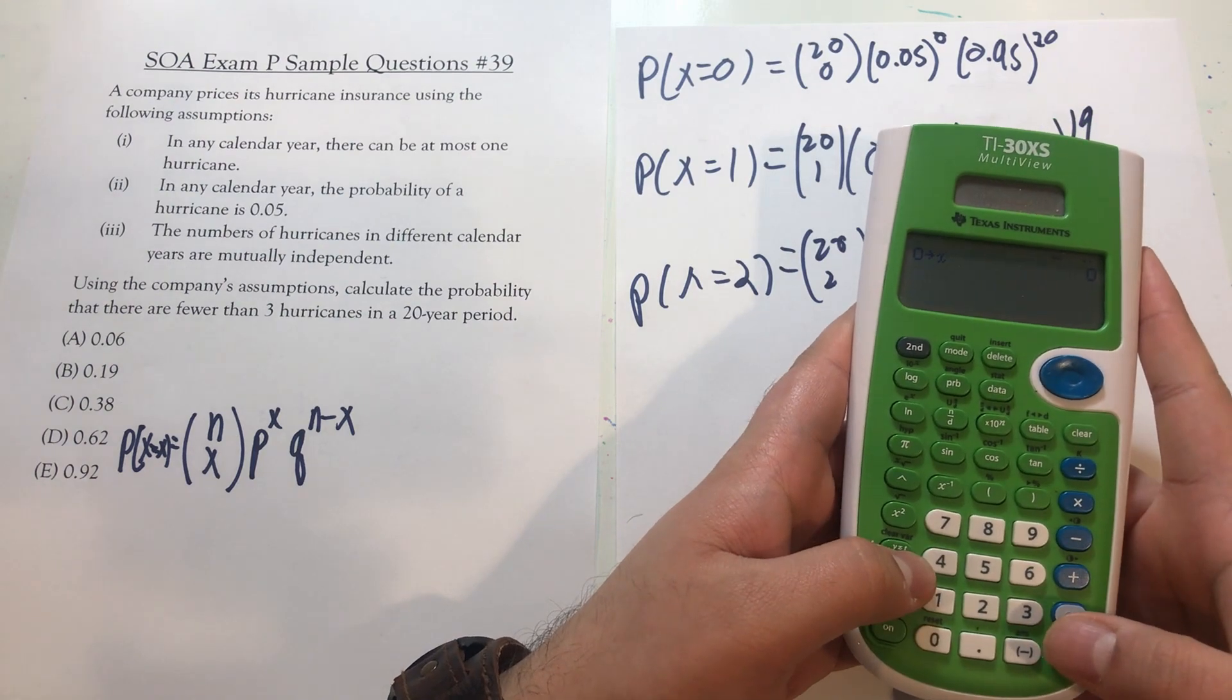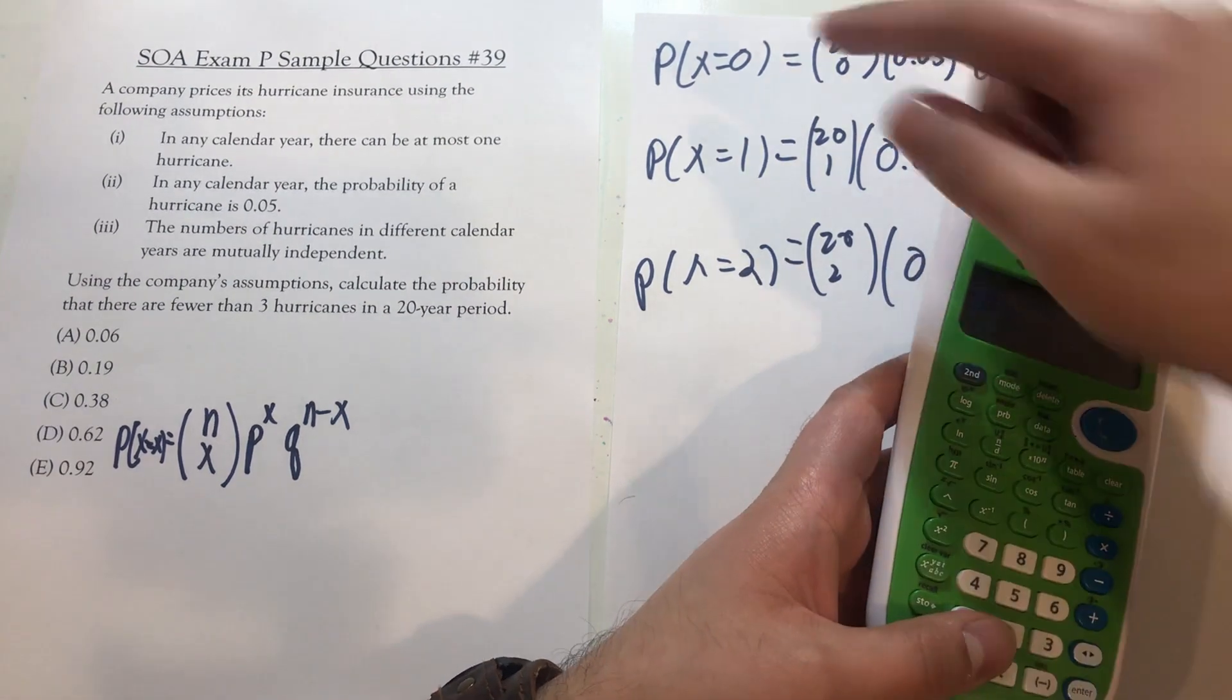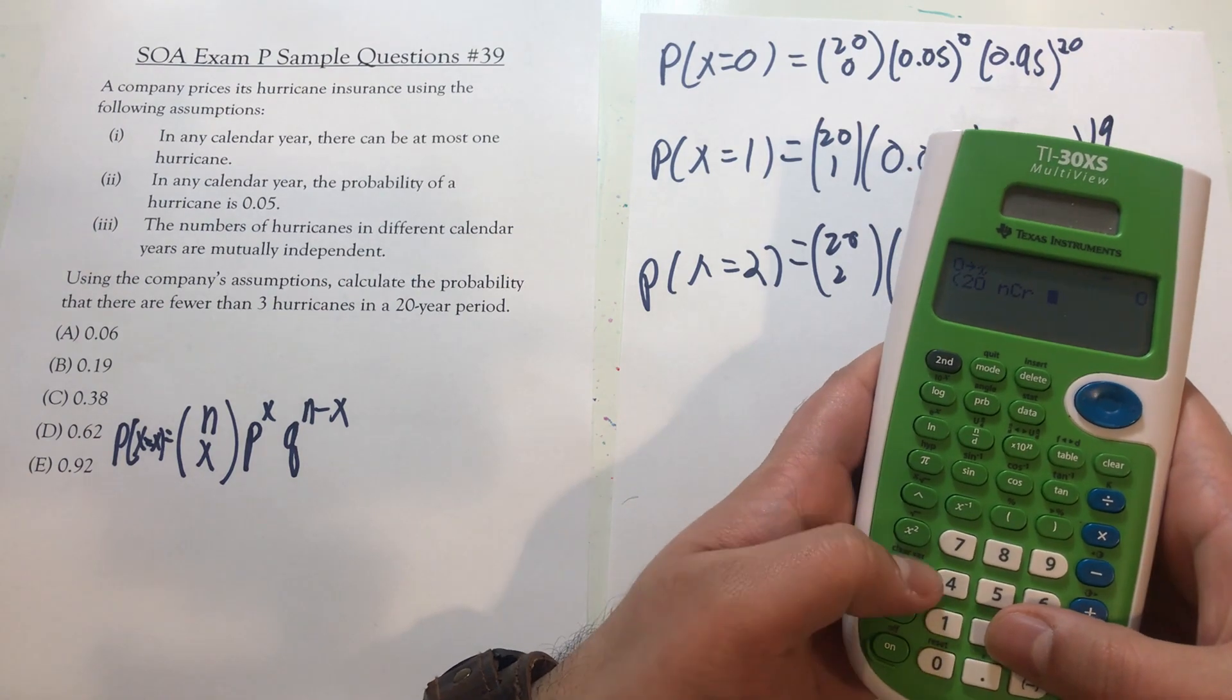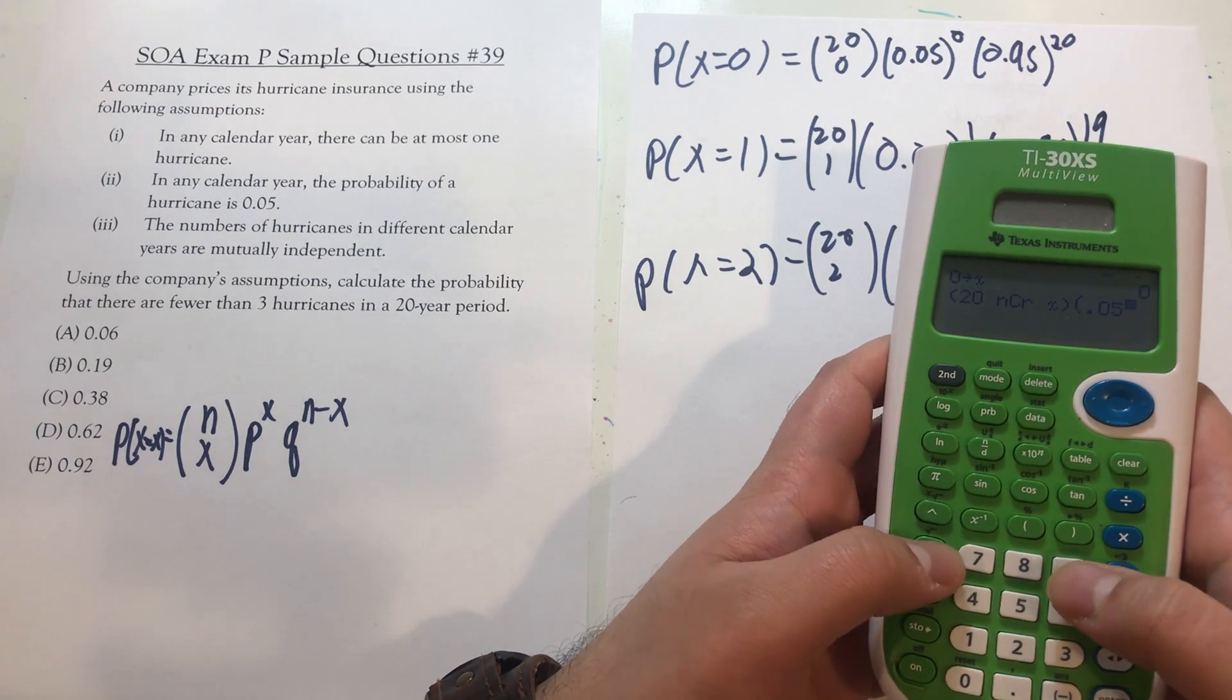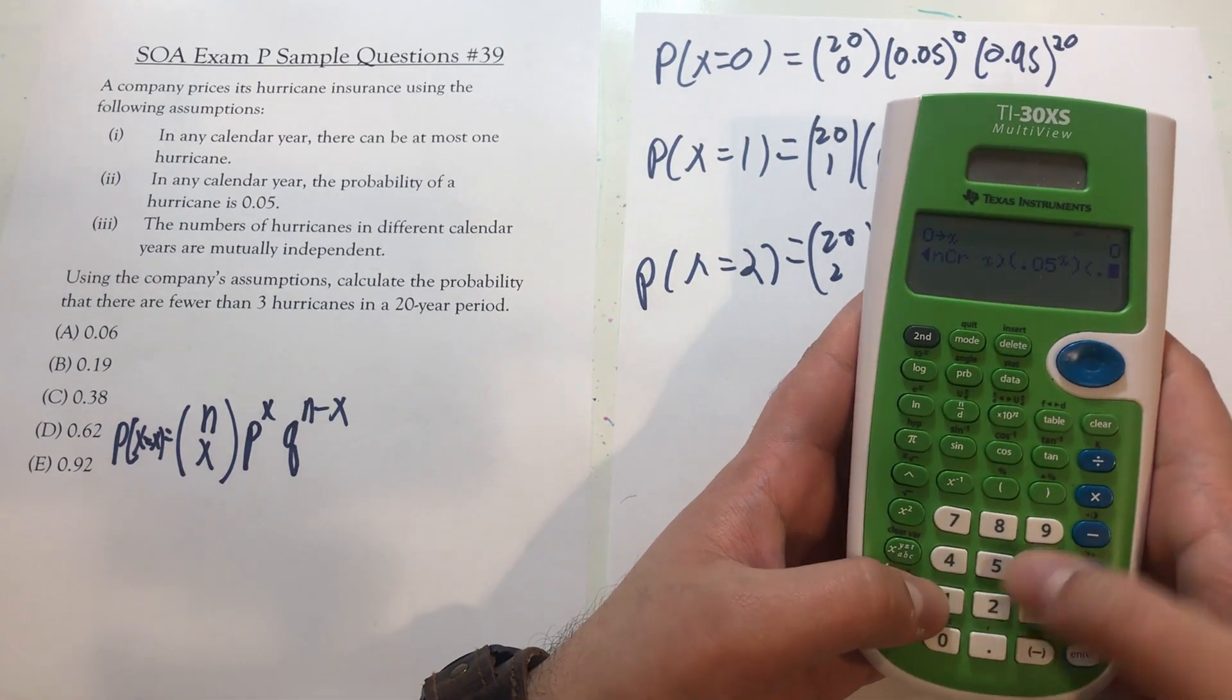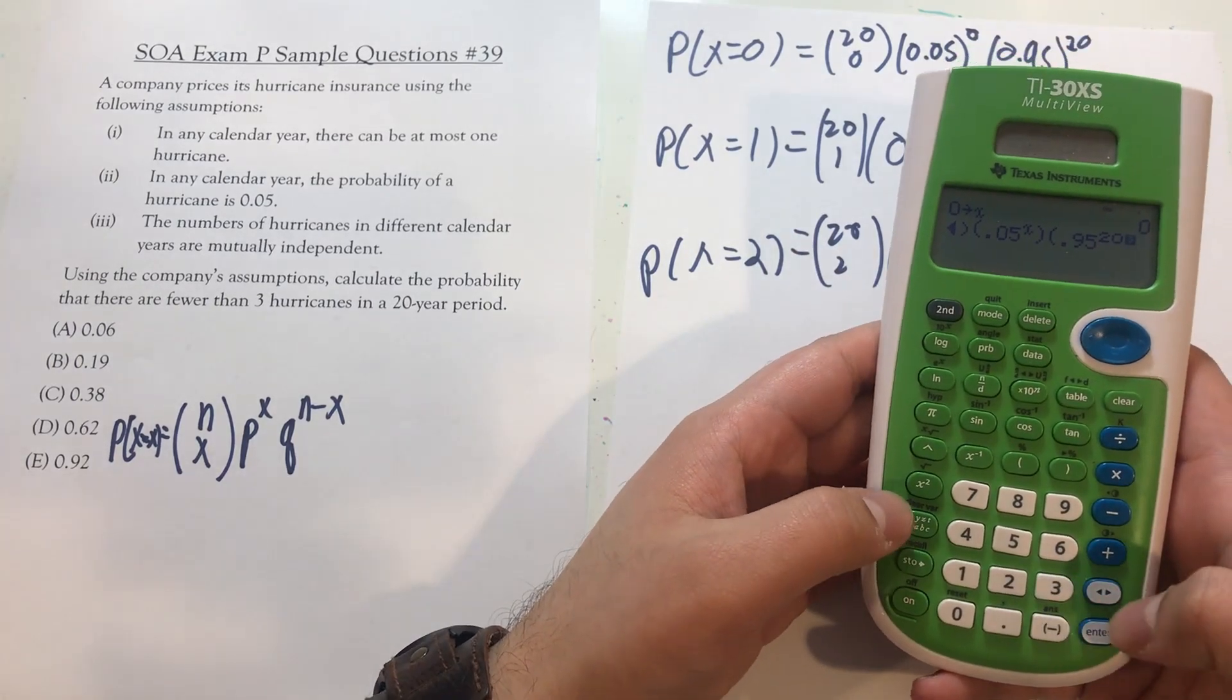And this is just for purposes of speed. I'll use 20 as n, but x is the thing that's changing with each time I do this. So this is going to be 20 choose x times 0.05 raised to the x power times 0.95 raised to the n minus x, which is 20 minus x.